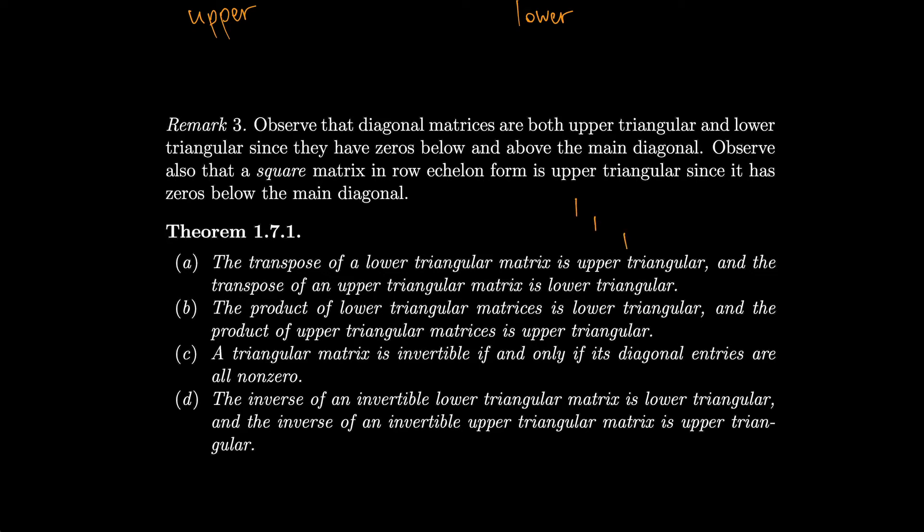Row echelon form automatically becomes upper triangular. The transpose of a lower triangular matrix is upper triangular, and the transpose of an upper triangular matrix is lower triangular — you interchange rows and columns, so lower becomes upper and vice versa. The product of lower triangular matrices is lower triangular, and the product of upper triangular matrices is upper triangular. A triangular matrix is invertible if and only if its diagonal entries are all non-zero. The inverse of an invertible lower triangular matrix is lower triangular, and similarly for upper triangular.